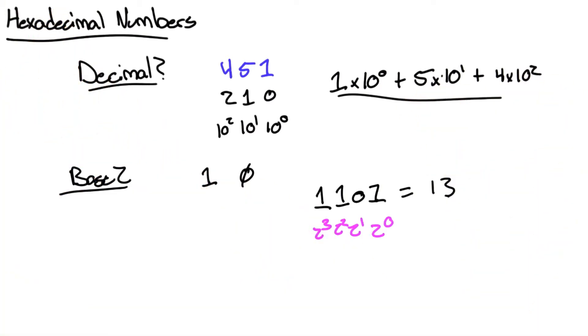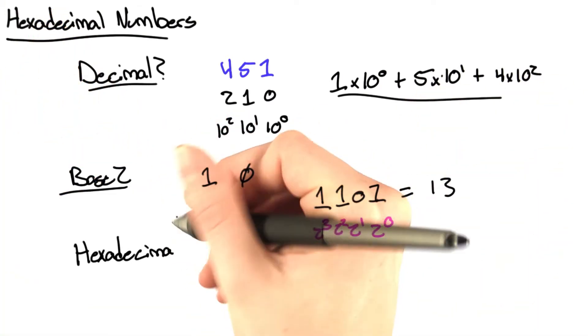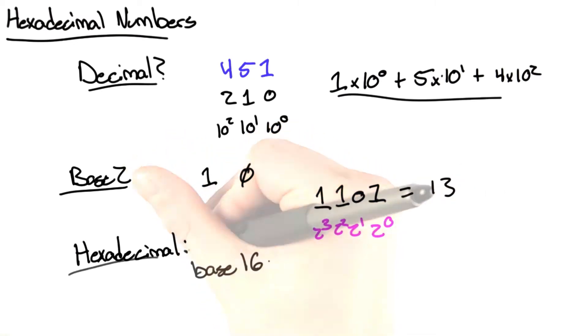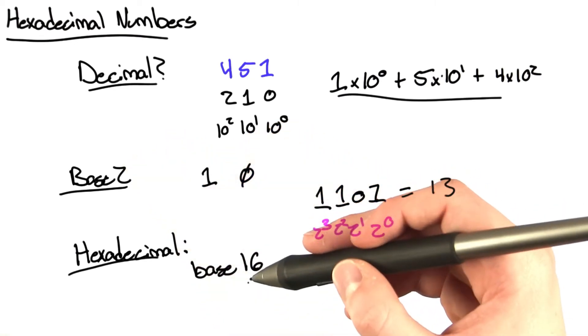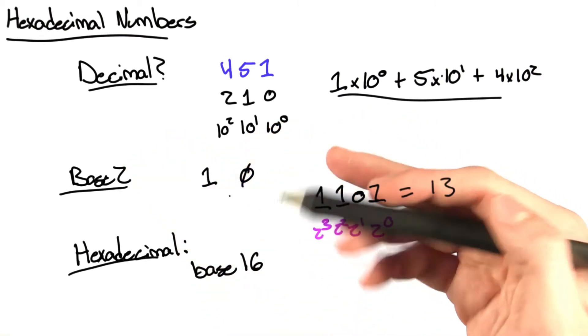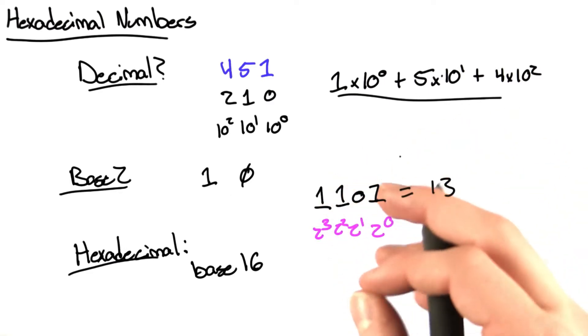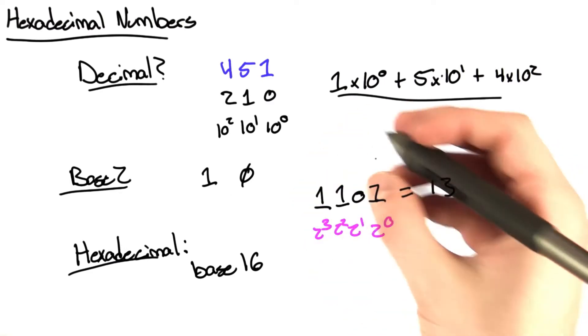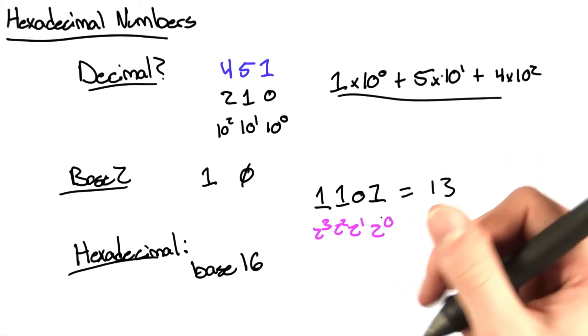So I still haven't answered what a hexadecimal number is. Hexadecimal is just base 16. And the reason we really like base 16, it may seem odd to you at first, is that it's a very nice way of representing these base 2 numbers and handling them in a more concise manner.